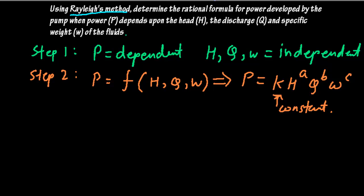Step three: we will replace each of the quantities by their dimensions. Power is P. Now, how to determine the dimensions? Power is the rate of doing work, that is energy per time.